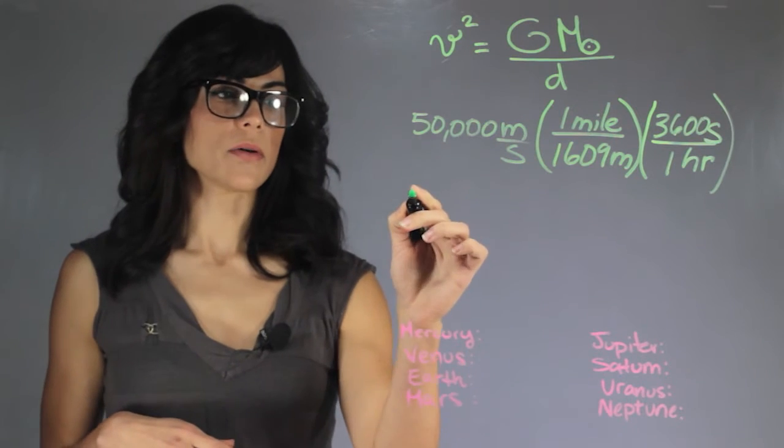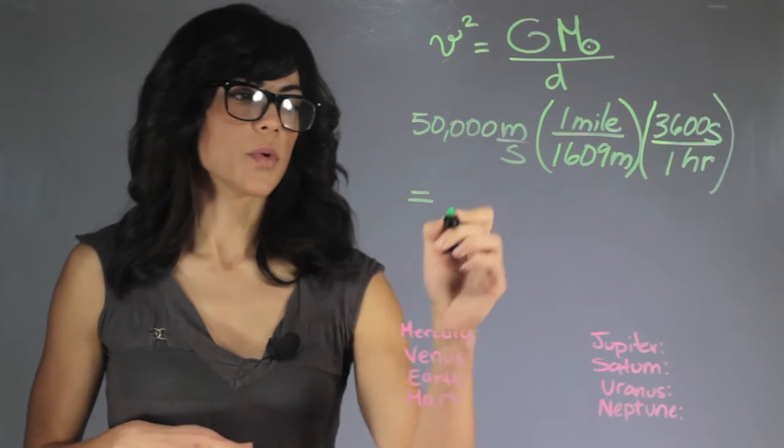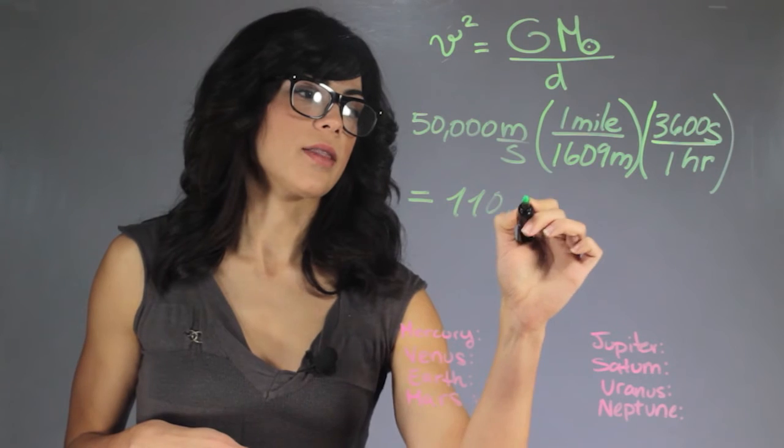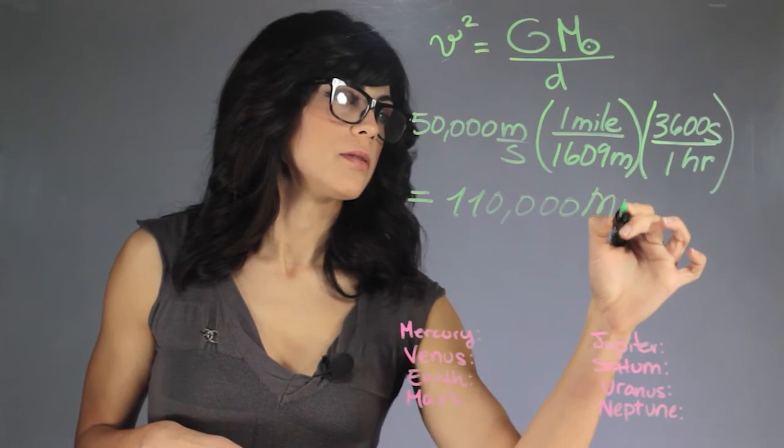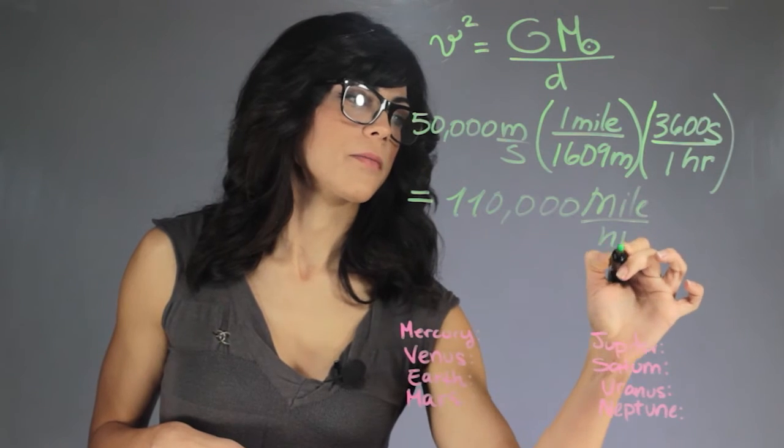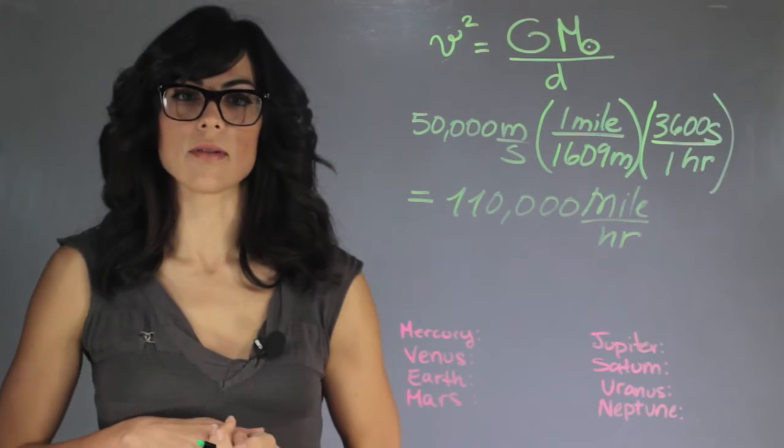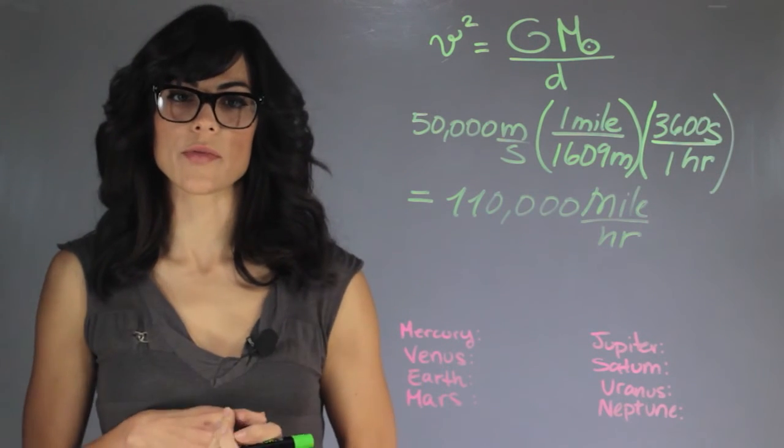If you multiply this all out, you'll end up with about 110,000 miles an hour, and that will be the orbital speed of Mercury.